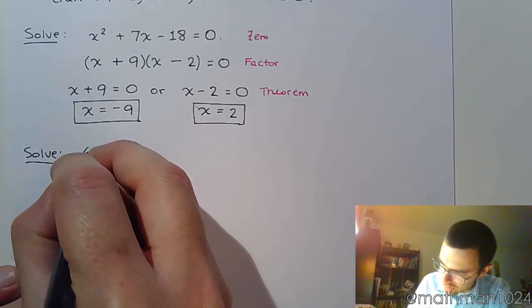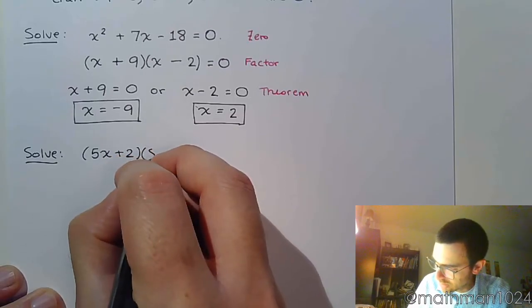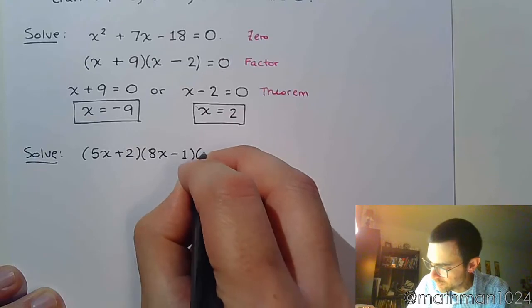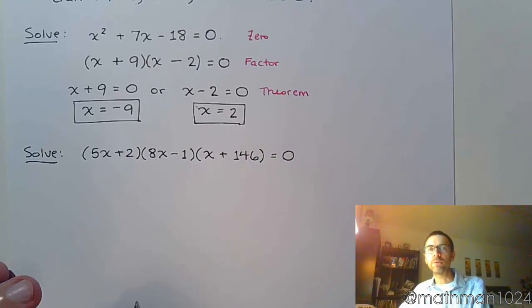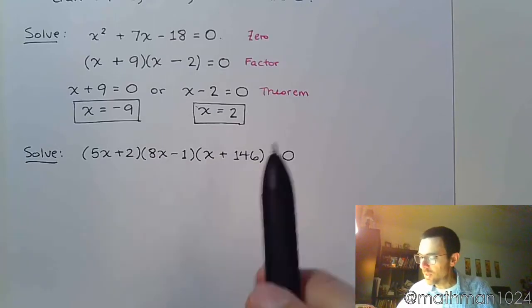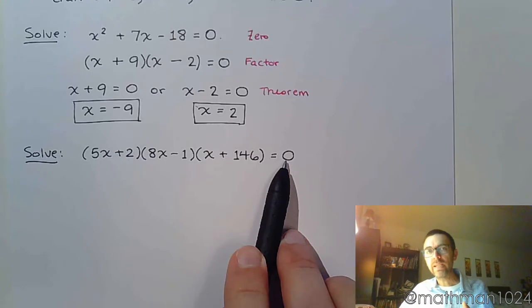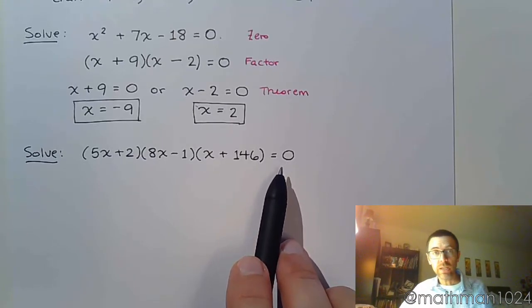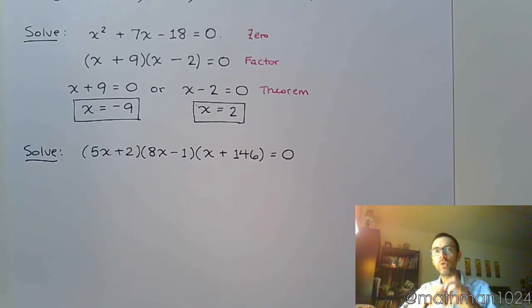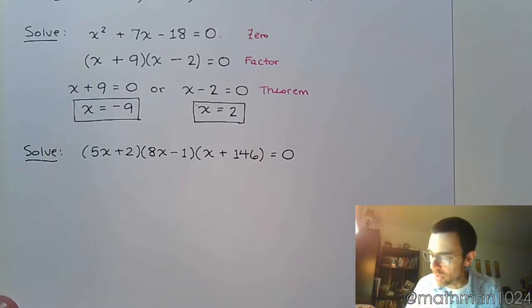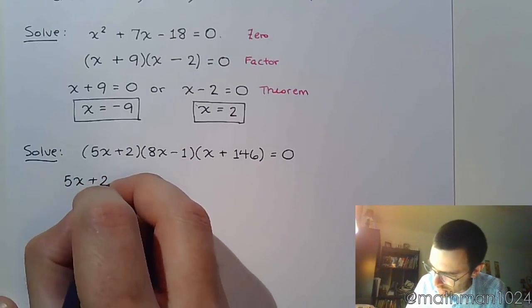All right, let's try this next one. We have (5x + 2)(8x - 1)(x + 146) = 0. So, let's make sure we go through and understand the process for the zero factor theorem. The words tell you exactly what to do. This needs to be equal to zero, which it is. It needs to be factored completely. And it is. When you've got the parentheses right next to each other, this is indicating a product, so this is factored. If you try to take this and expand it all out and multiply it, that's where you come into big problems. I've already done the work for you. It's equal to zero and it's factored. You're welcome.